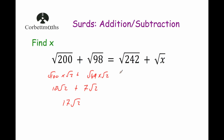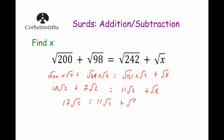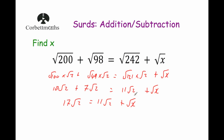On the right-hand side we have Root 242. Since we're dealing with Root 2s, we can think of half of 242, which is 121 — and that's 11 squared, which is great. So Root 242 equals Root 121 times Root 2, and the square root of 121 is 11, giving 11 Root 2 plus Root x. So we have 17 Root 2 equals 11 Root 2 plus Root x. Subtracting 11 Root 2 from both sides: 17 Root 2 minus 11 Root 2 equals 6 Root 2, so 6 Root 2 equals Root x.